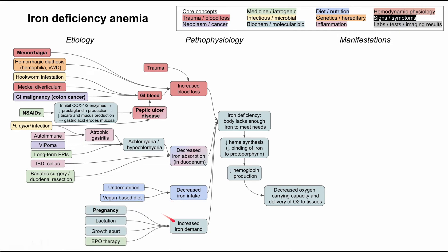Metabolic conditions leading to increased iron demand include pregnancy, where you're producing hemoglobin for yourself and for your baby. Lactation also significantly increases iron demands. Growth spurts in children and teenagers may suddenly require more iron than the diet provides. Lastly, EPO therapy — erythropoietin, a kidney protein that stimulates red blood cell production — increases iron demand, so patients on EPO need adequate iron in their diet to produce those red blood cells.